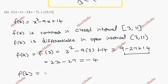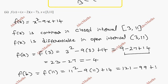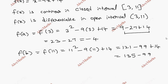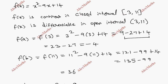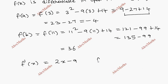f(b) = f(11) = 11² - 9×11 + 14 = 121 - 99 + 14 = 36. Now differentiating f(x) = x² - 9x + 14, we get f'(x) = 2x - 9. So f'(c) = 2c - 9.